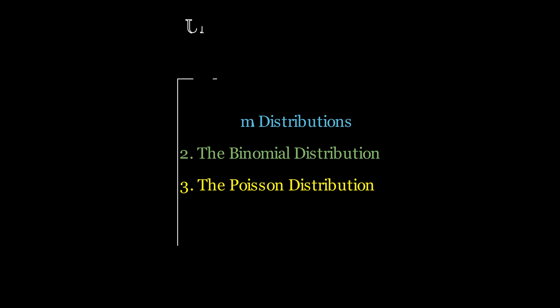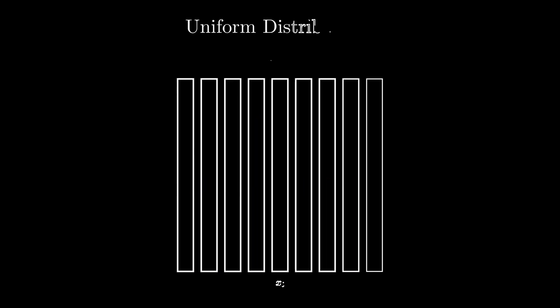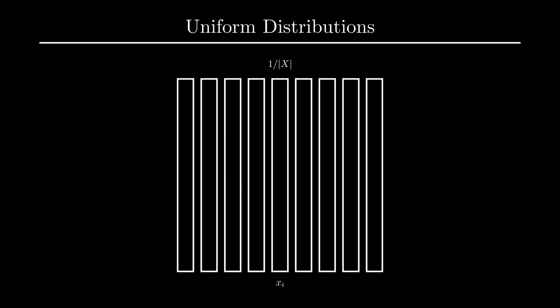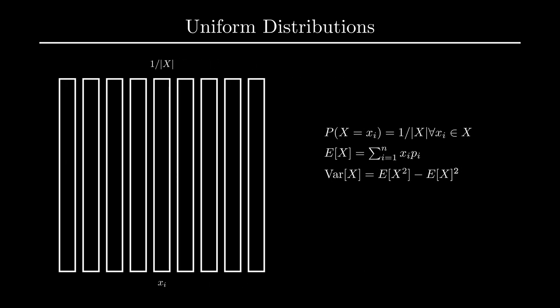A uniform random variable is a random variable such that the probability of each element in the set is equal to one over the total number of elements in the discrete set. The expected value and variance of a discrete distribution can be computed using the familiar E of X and V of X formulae. In many questions, it is common to say that the uniform distribution spans some range of integers evenly.